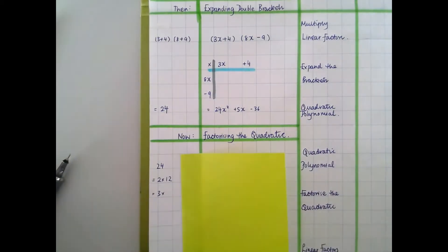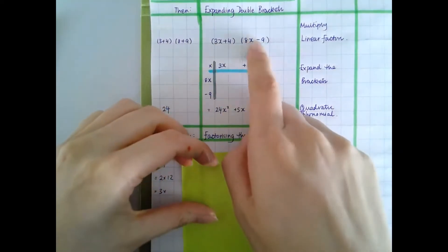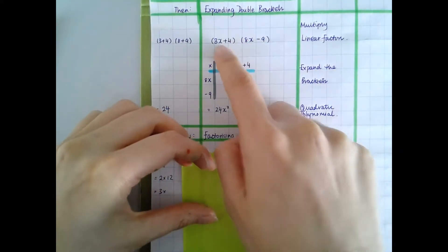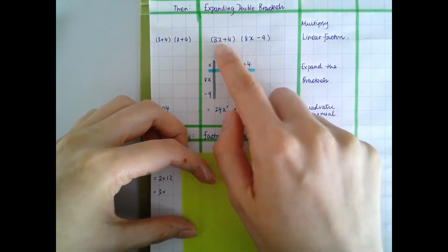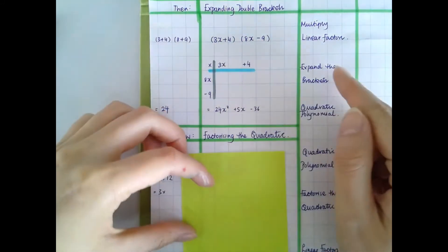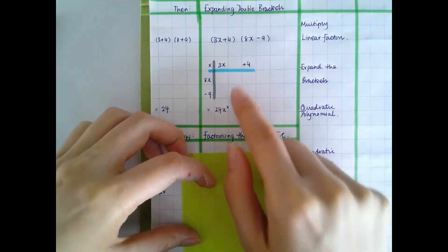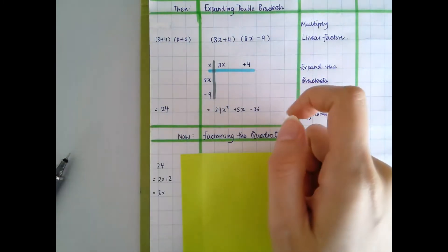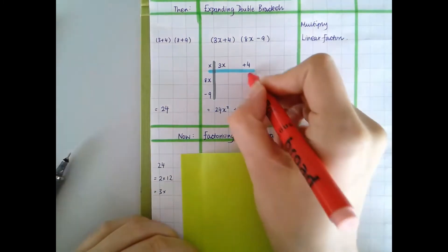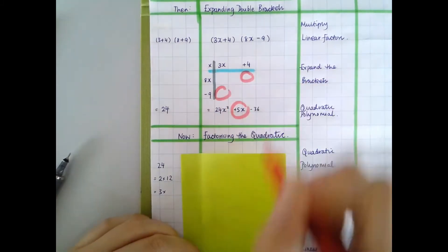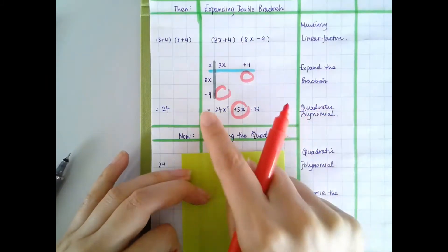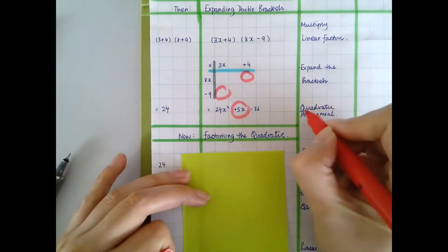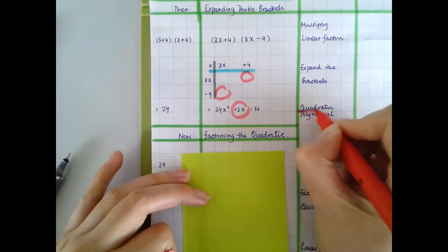In our previous topic, we were expanding double brackets. I was taking two linear factors — linear because the highest power is just x, not x squared nor x cubed — multiplying them together and expanding the brackets using a grid. There were always some like terms that we could collect, for example to give us a positive 5x. When we expanded these linear factors, it gave us a polynomial — more importantly, a quadratic polynomial.